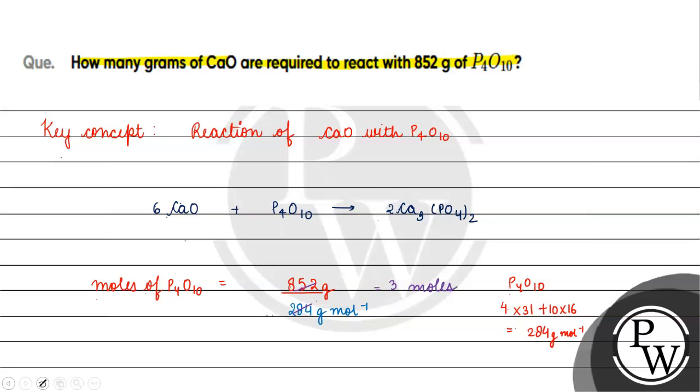Now if we see our equation, then 1 mole P4O10 reacts with 6 moles of calcium oxide. When we have 3 moles, then what will happen?